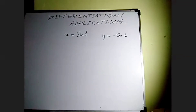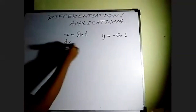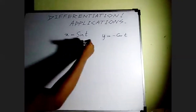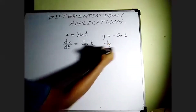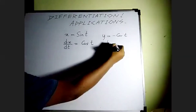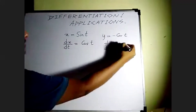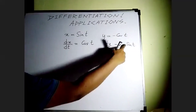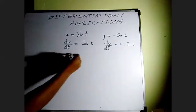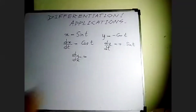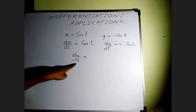Let's differentiate with respect to t. For x = sin t, differentiating gives dx/dt = cos t. Then differentiating y with respect to t: dy/dt — the differentiation of minus cos t is minus times minus sin t, which becomes plus sin t. But in the question they are asking for dy/dx. We have dy/dt and dx/dt, both derivatives with respect to t, and now we have to convert the subject to x.